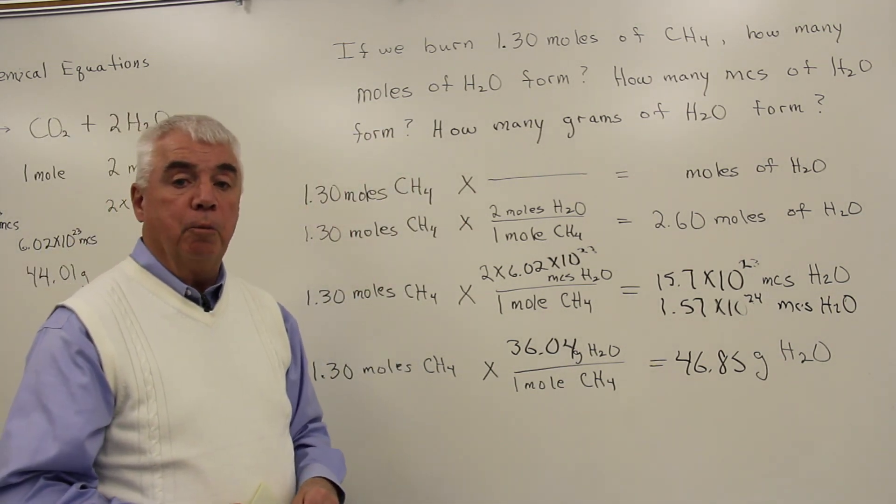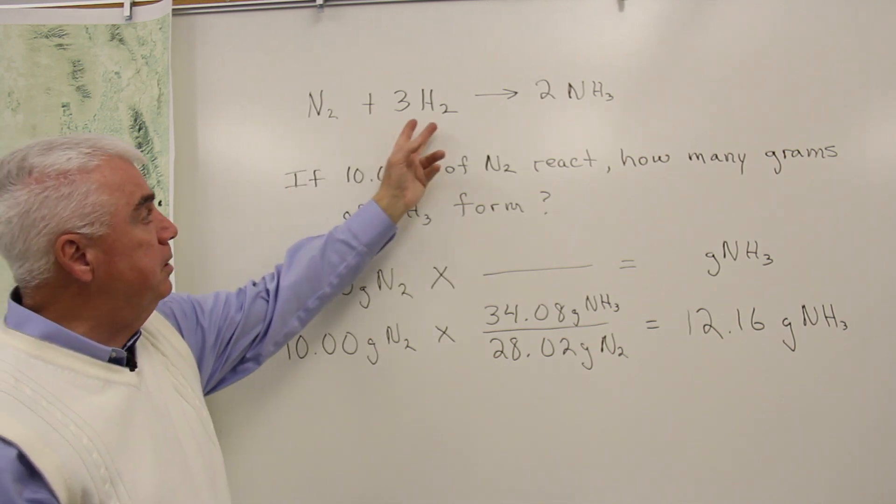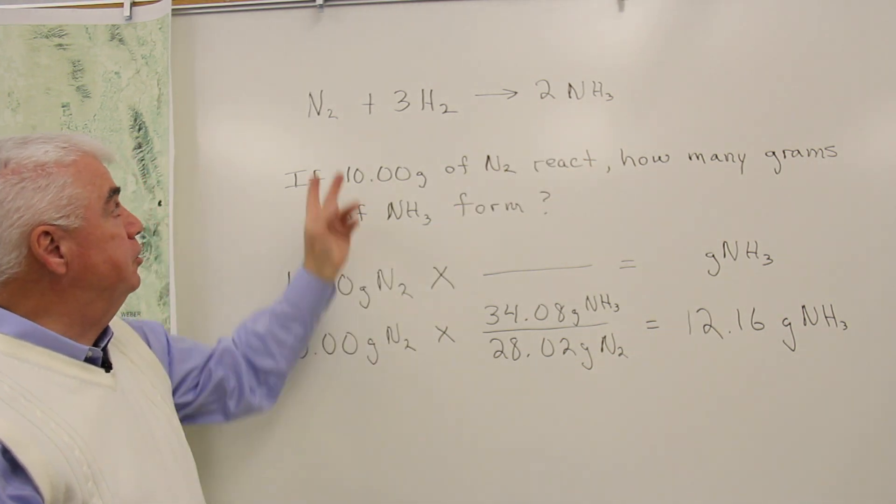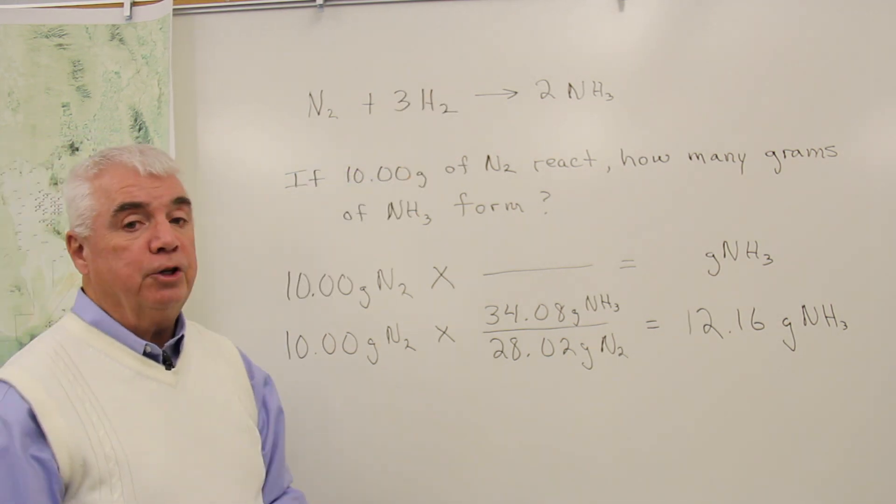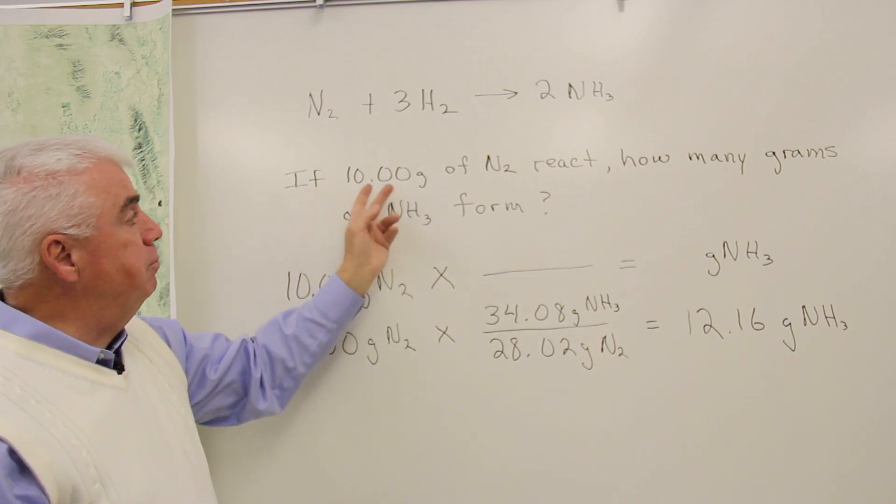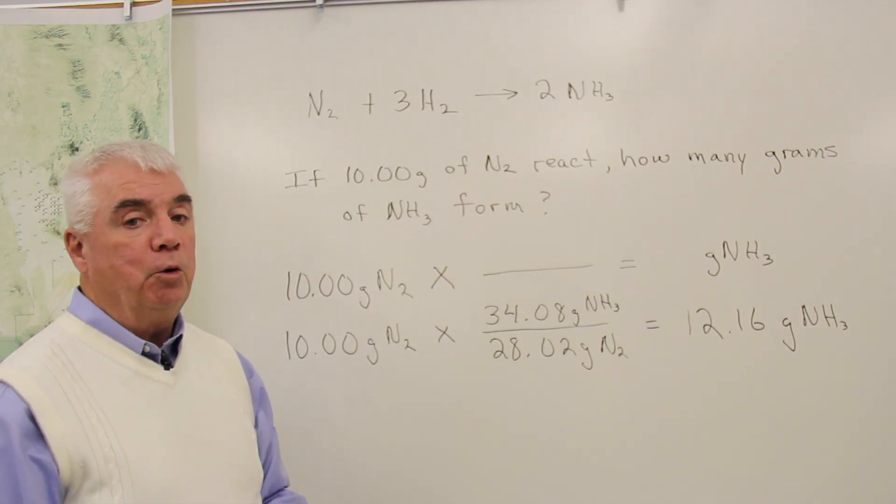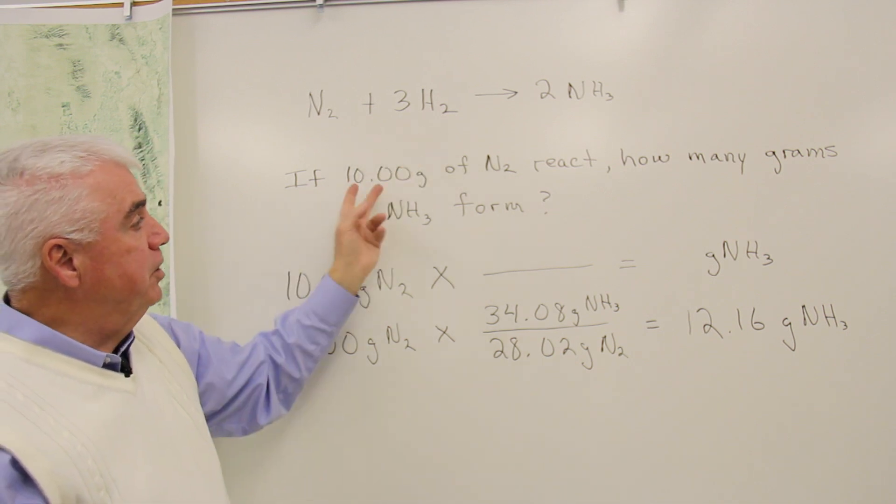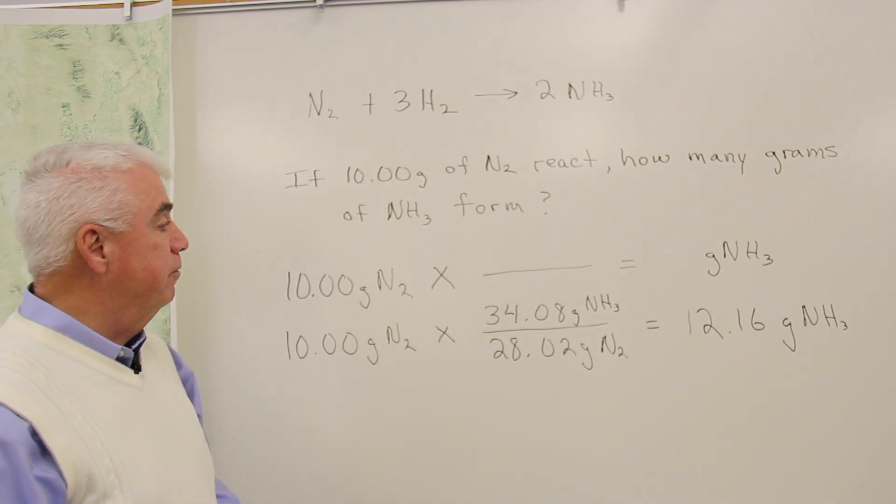Let's do one more equation for practice. This is a very useful equation in industry. Nitrogen plus hydrogen to give ammonia. Ammonia is a valuable fertilizer. Nitrogen very abundant in the atmosphere. And so this reaction is carried on in a huge scale. If 10.00 grams of nitrogen react, how many grams of ammonia form? Very typical kind of problem. And of course, by saying that it reacts, we're assuming that we've got all the hydrogen that we need for the reaction.